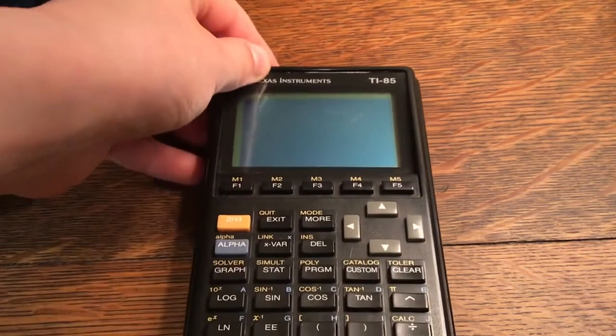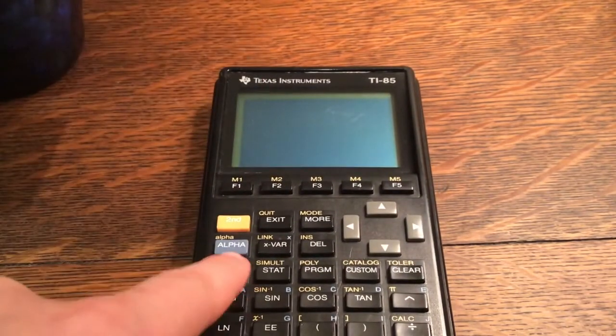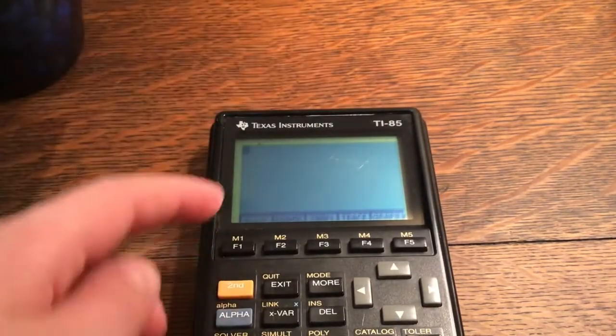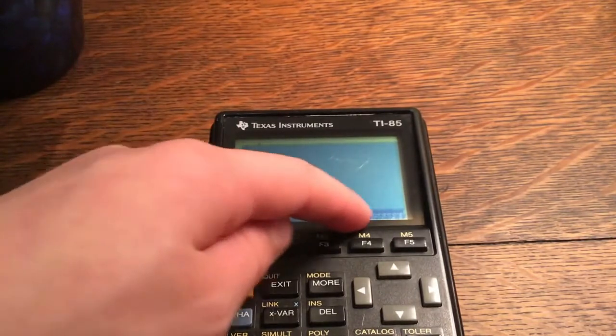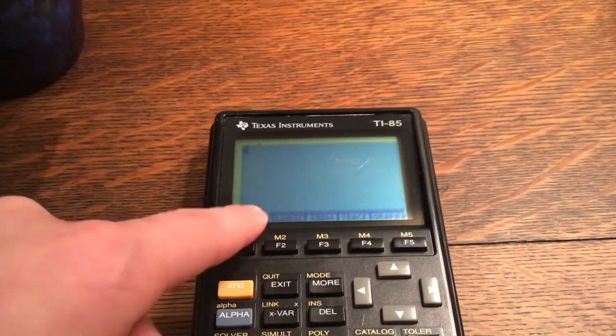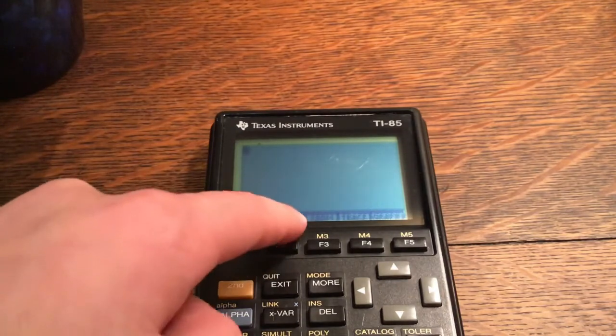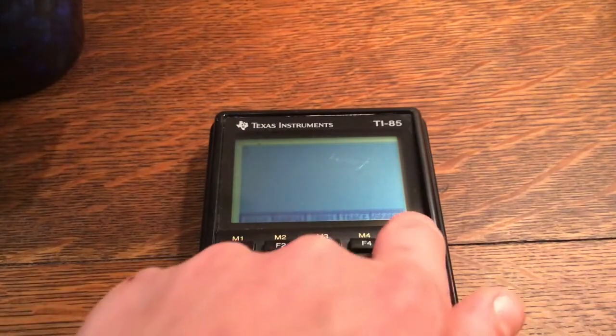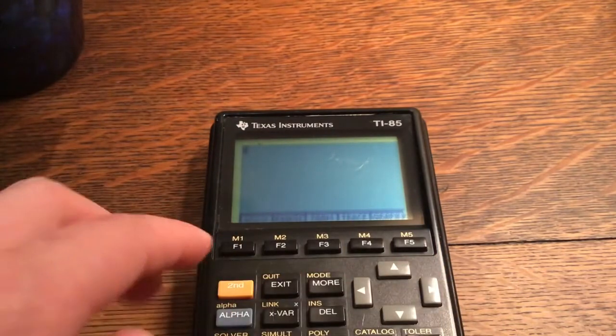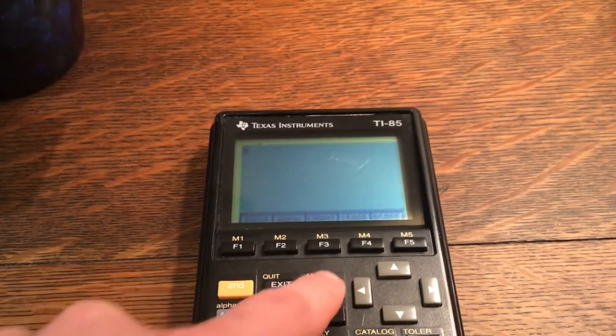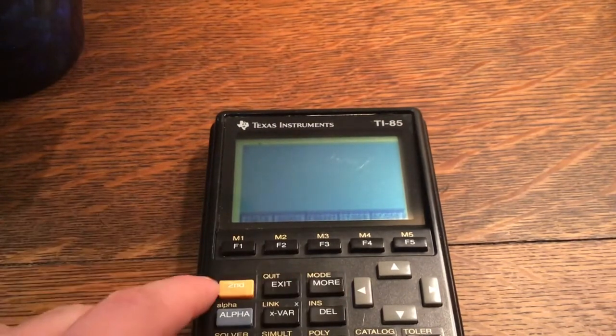This is a graphing calculator so you can click graph to graph stuff and it'll give you a list of options. As you can see there's little lines that separate them and this button corresponds with the first one, second button with the second one, third button with the third one, and so on. If there's a little arrow over there, which is kind of hard to see, you can click more and it will take you to more options. I'm going to quit that.